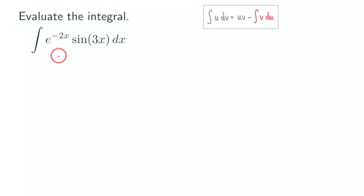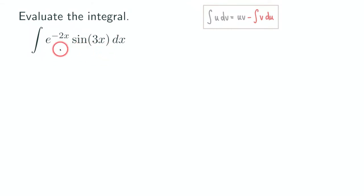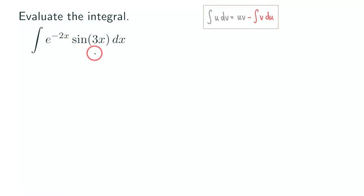Hello everyone, we are going to integrate this function today. We have a product of e to the negative 2x times sine of 3x. So we have this product with an exponential function and a trig function, and we are going to use integration by parts because that's a product, so hopefully we can use it to reverse the product rule.